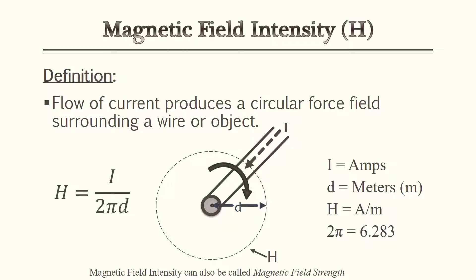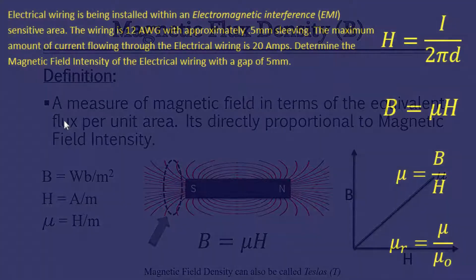The first key term is magnetic field intensity. Magnetic field intensity is a circular field which surrounds an object or wire when current is flowing through it. This is similar to a magnet — when you're measuring gauss, that's the magnetic field, that's its strength. Some magnets are strong, like speaker magnets or industrial magnets, while others like a fridge magnet are very weak. Magnetic field intensity is also called magnetic field strength in some textbooks, so be aware it can be referred to by both names. It is measured in H, which is amps per meter.